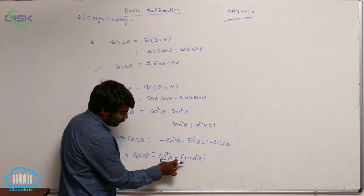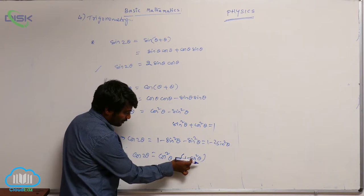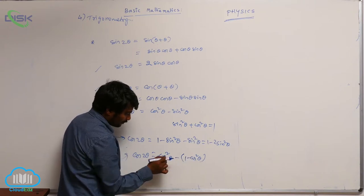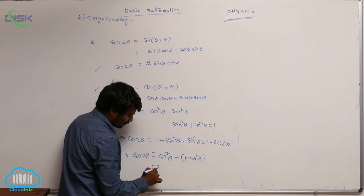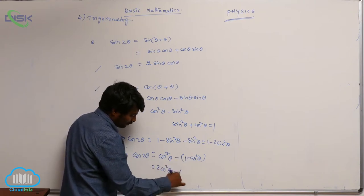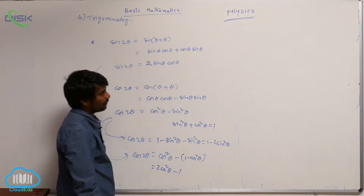From cos 2θ = cos²θ − (1 − cos²θ), the minus times minus gives plus, so cos²θ + cos²θ = 2cos²θ, giving us cos 2θ = 2cos²θ − 1.